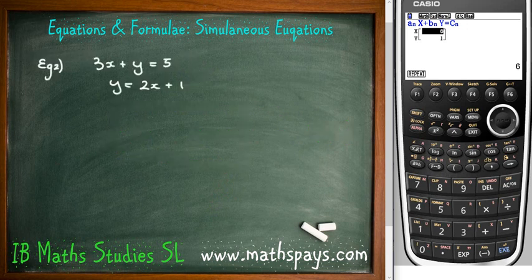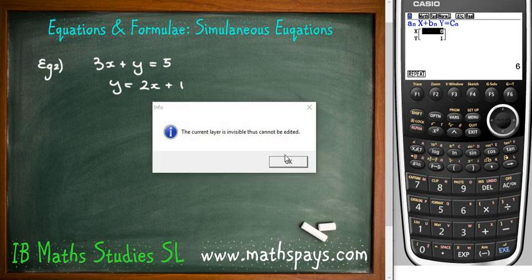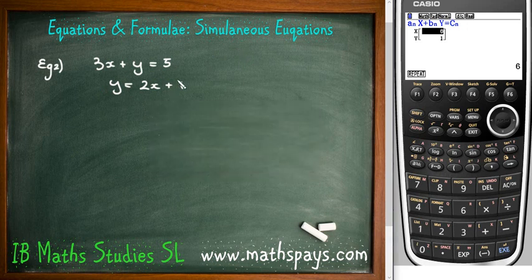Let's have a look at the next question. 3x plus y equals 5 and y equals 2x plus 1. Well, certainly the first one is in the form of ax plus y equals c. So the first one's okay, so we know that when we go through we can enter the information. The problem is the second one.